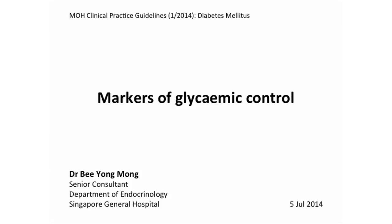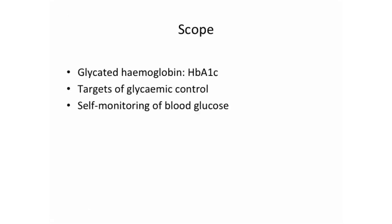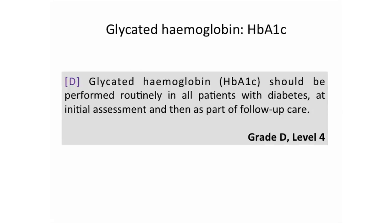I'm assigned to give this update on the markers of glycemic control. I'll cover glycated hemoglobin, particularly HbA1c — a molecule very important in our clinical practice. I'll update the audience on changes in reporting of HbA1c as well as changes in glycemic control targets. I'll expand on the point about individualization mentioned earlier, and end with a slide on glucometer use for patient self-monitoring of blood glucose.